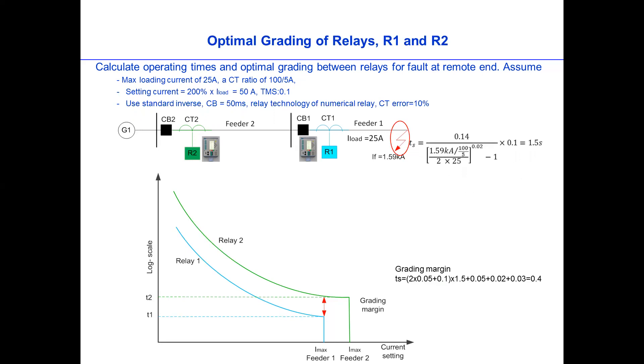For example, we can just use this kind of formula, the standard inverse, 0.14, 1.59 kAmps, which is the fault current, divided by the CT ratio, divided by the sitting current. And if we use TMS value, which is the minimum value of 0.1, then we have a trip time of 1.5 seconds. So the T1 will be 1.5 seconds.